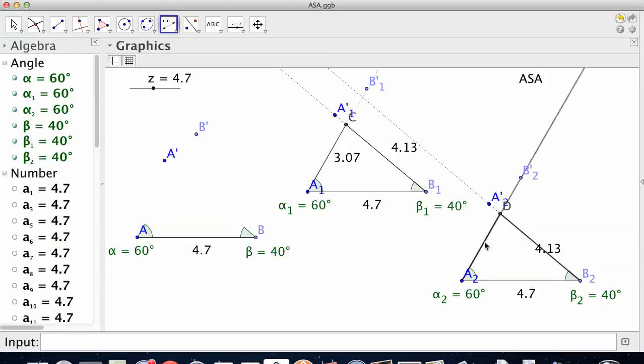4.13 and 3.07. So if you know an angle, the side next to it, and the angle next to that - angle, side, angle - that is enough to make the whole triangle exactly the same, congruent. So that's ASA.